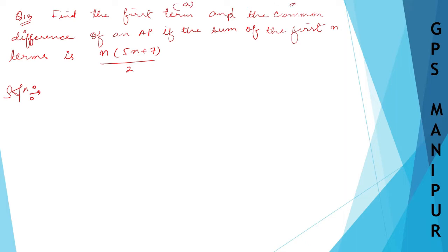Common difference, we need to find out D. Often AP, if the sum of the first N term is this much, N, 5N plus 7 divided by 2.